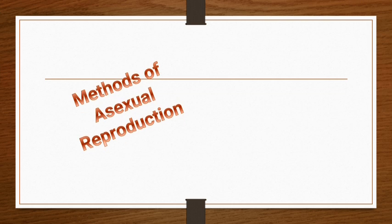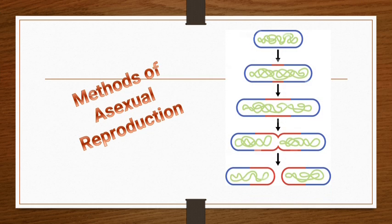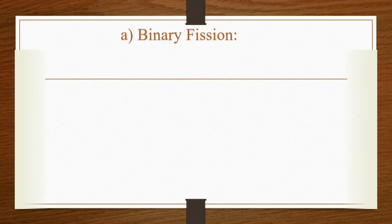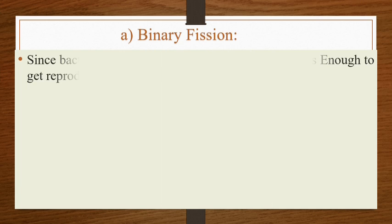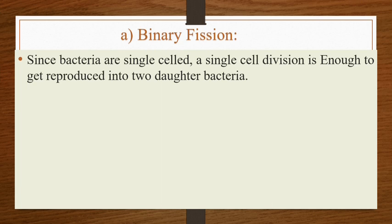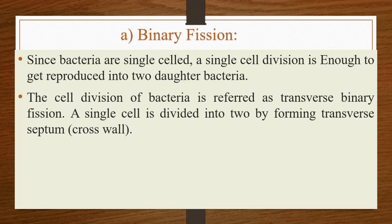The first method of asexual reproduction is binary fission. Since bacteria are single-celled, a single cell division is enough to get reproduced into two daughter bacteria. The cell division of bacteria is referred to as transverse binary fission.